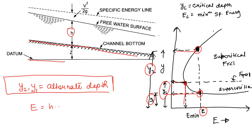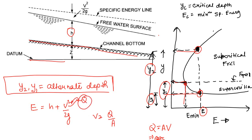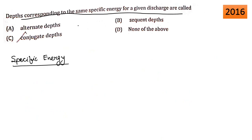For a given discharge Q, E equals H plus V squared by 2G. Since Q equals A times V, substituting V equals Q/A gives two values of depth for a given value of E. These two depths are known as alternate depths. Option A is the correct option.